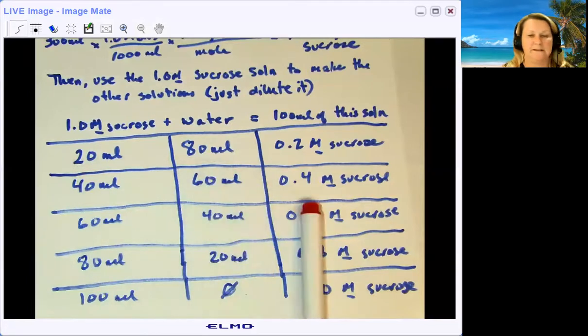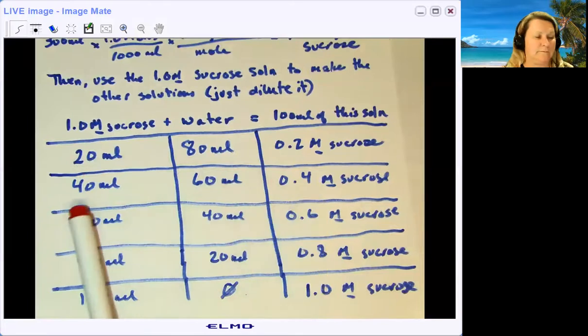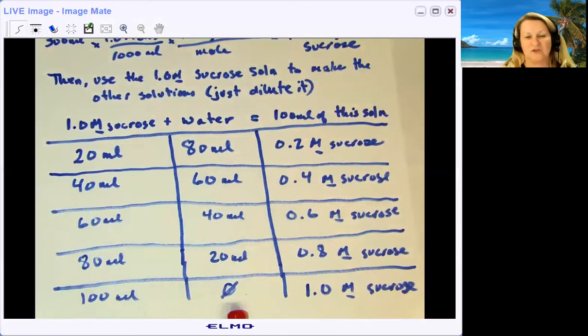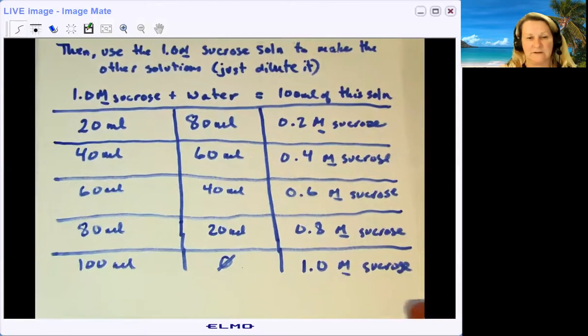To get 0.4 molar, you need four parts of the one molar solution to six parts of water, and so on down the line. And that is just so much easier, I think, than making each solution from scratch.